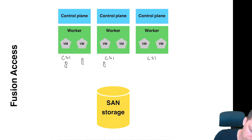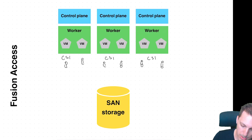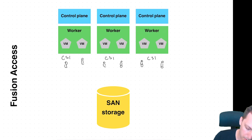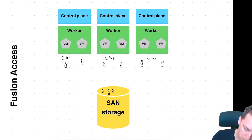What this ends up meaning is that every single VM gets its own little storage. So here we have six VMs, and to simplify it — we have six little disks, and they will on the SAN storage be mapped to six little LUNs.